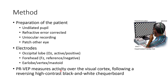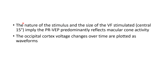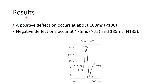PR VEP measures activity over the visual cortex following a reversing high-contrast black and white checkerboard, as you can see in this picture. The nature of the stimulus and the size of the visual field stimulated — that is, central 15 degrees — imply that PR VEP predominantly reflects macular activity. The occipital cortex voltage changes over time are plotted as waveforms.